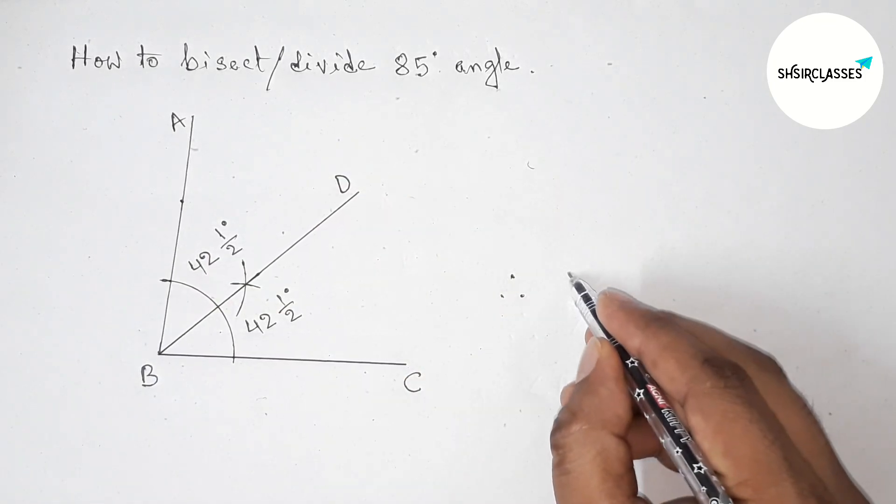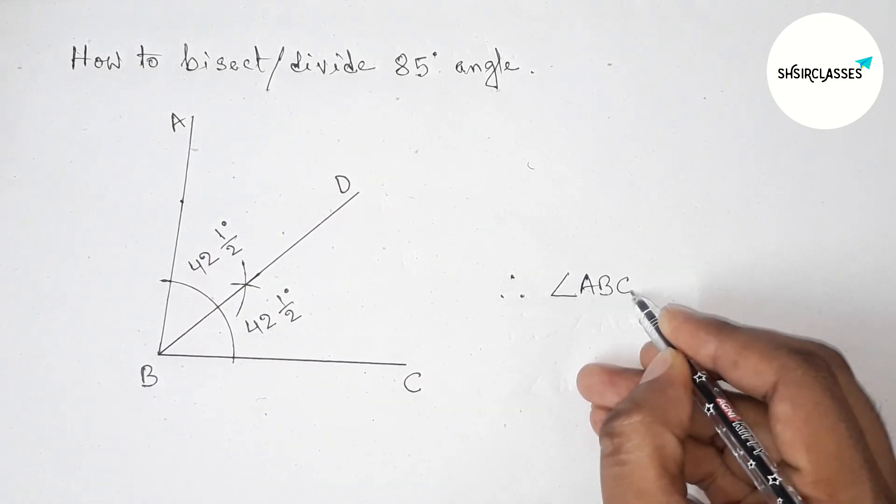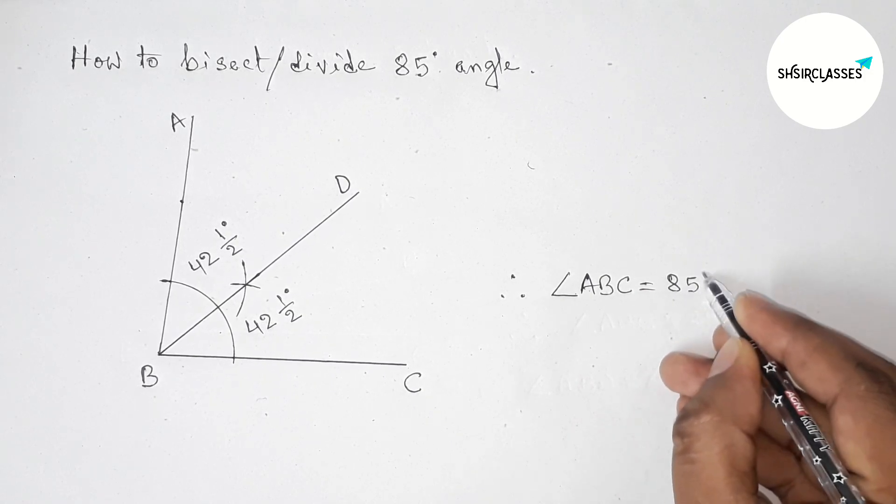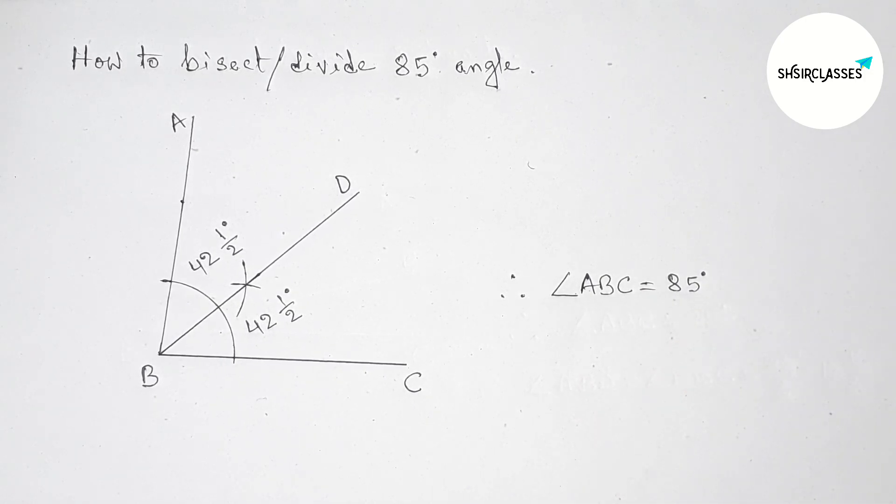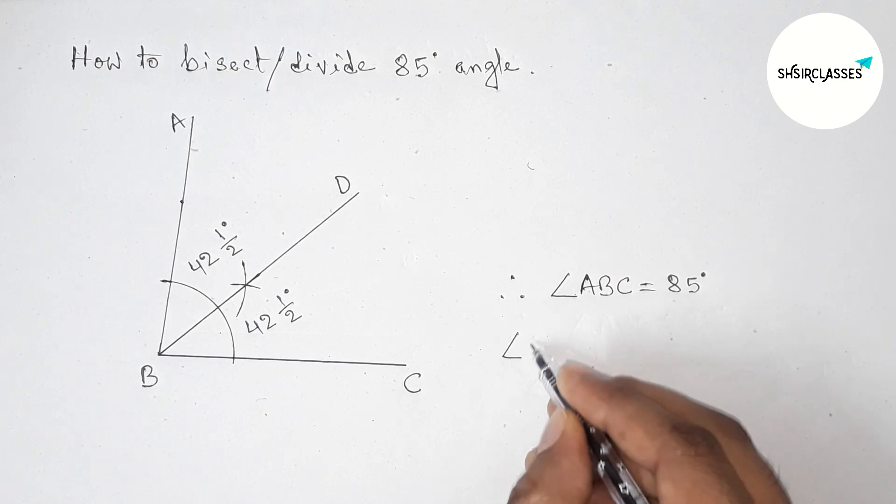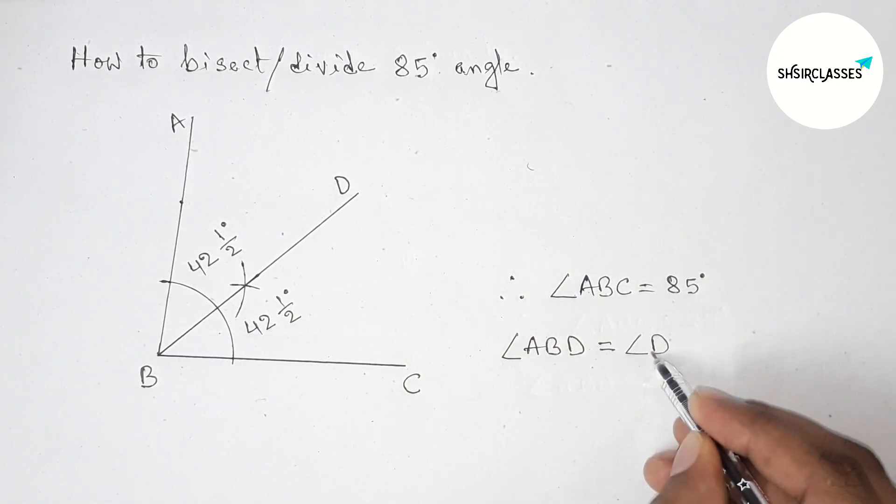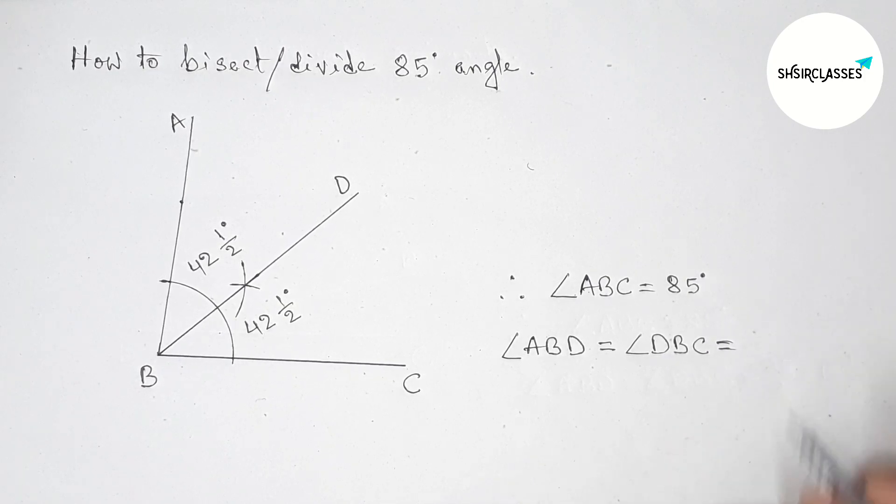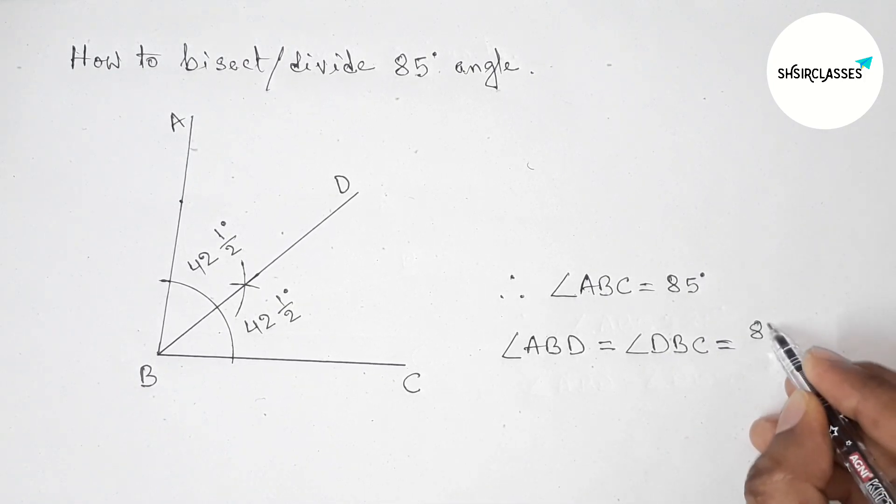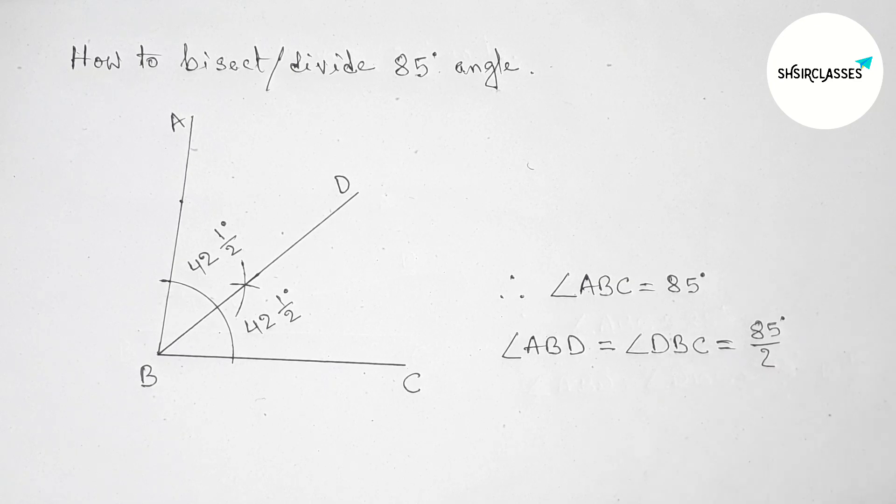Here angle ABC, so angle ABC is 85 degrees. And angle ABD, so angle ABD is equal with angle DBC, and both are 85 by 2. So dividing by 2, this is obviously 42 and 1/2 degrees.